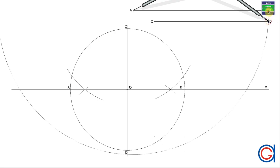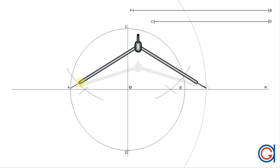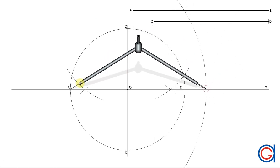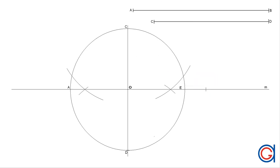The next step is setting our compass to the length of the major axis AB. We are going to transport it onto the horizontal line m from point A. Setting our compass on point A, we scribe an arc cutting the horizontal line m, and we obtain another point B on this line, as can be seen here.